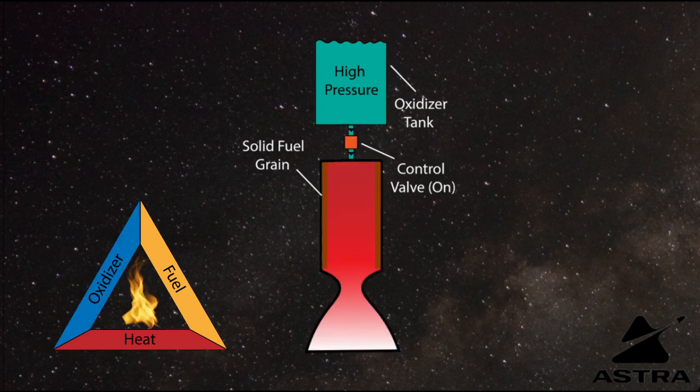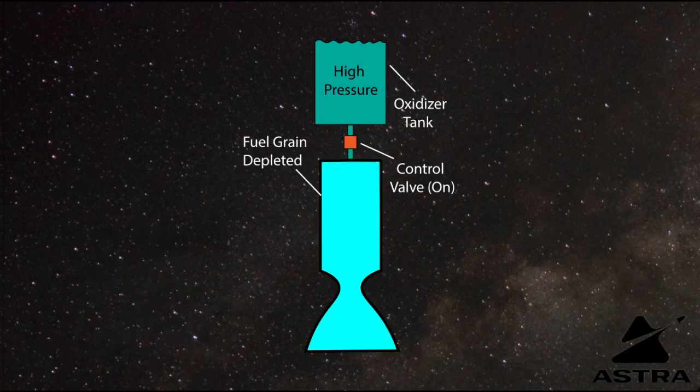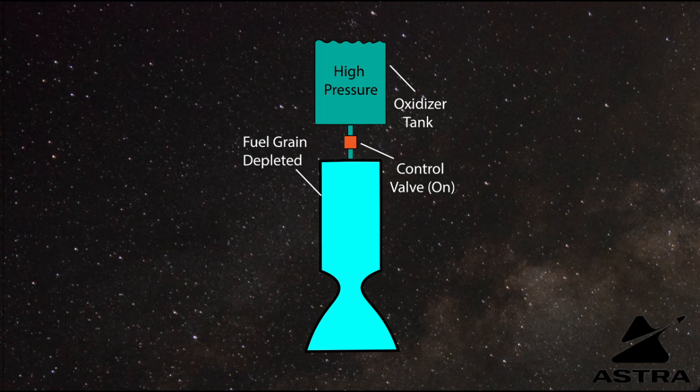This means that they have a lot of the safety benefits that come with the liquid engine, while also maintaining some of the simplicity that comes with the hybrid engine. Ultimately, this pair of factors is what allowed Astra to easily pick the hybrid rocket as the best rocket option for getting to the Karman line.